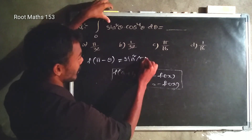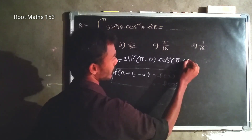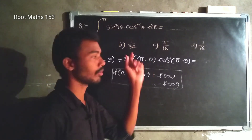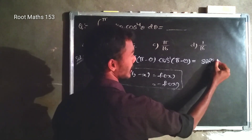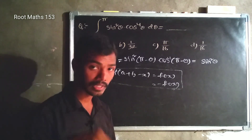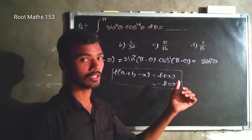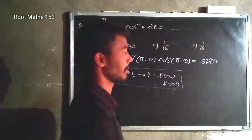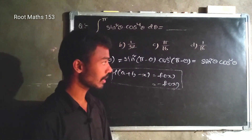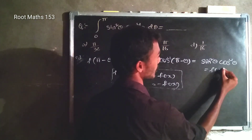We substitute: sin squared(180 degrees minus theta) into cos power 4(180 degrees minus theta). Since sin(180 minus theta) equals sin theta, the whole square gives sin squared theta. And cos(180 minus theta) is in the second quadrant, so it equals minus cos theta. Minus cos theta to the power 4 equals cos power 4 theta.